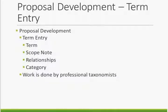After completing the research, that information is used to construct the term entry. This includes selecting the final form the term name will take, writing a scope note if necessary, establishing the appropriate relationships, and selecting a category. All of this work is completed by experienced professional taxonomists. We check each other's work, discuss any issues, and must come to a unanimous agreement on all aspects of the term's entry before it can proceed to the next step.